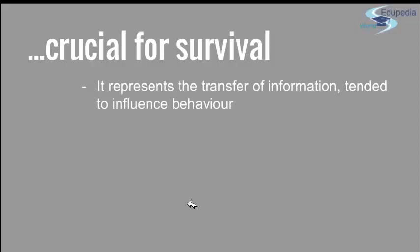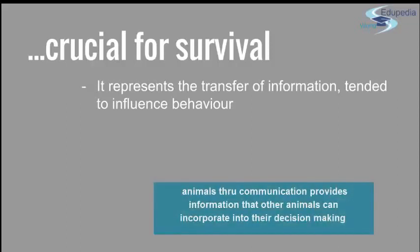A robust definition of communication would be that it is a transfer of information from one or a group of animals to one or more other animals which affects either the current or future behavior of their receivers. What this sentence actually means is that animals, through communication, provide information that other animals can incorporate into their decision making.